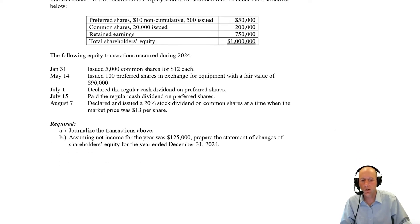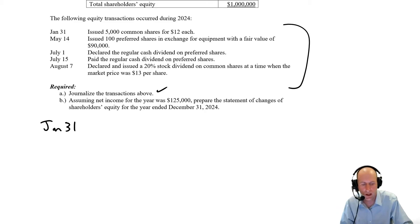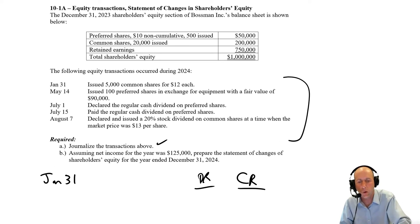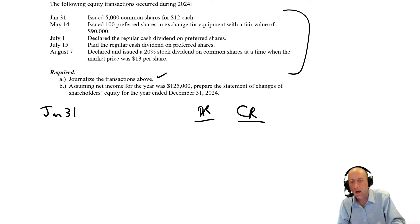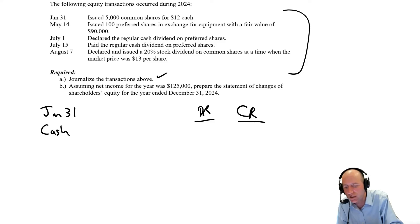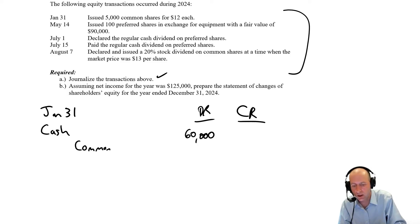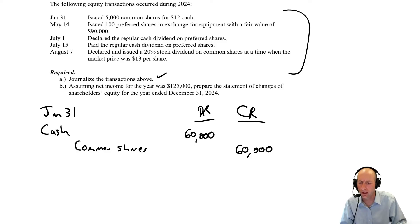The following equity transactions occurred during 2024, and we need to do journal entries. January 31st: issued 5,000 common shares for $12 each — more than the previous $10 issuance price, but that doesn't matter for this entry. Unless told otherwise, assume we received cash. 5,000 times $12 is $60,000. Debit cash $60,000, credit common shares $60,000. Shareholders' equity increases.